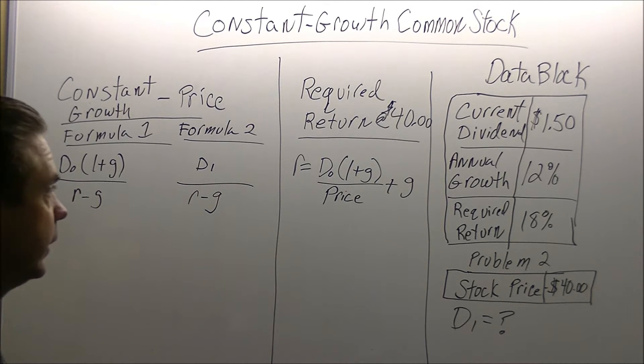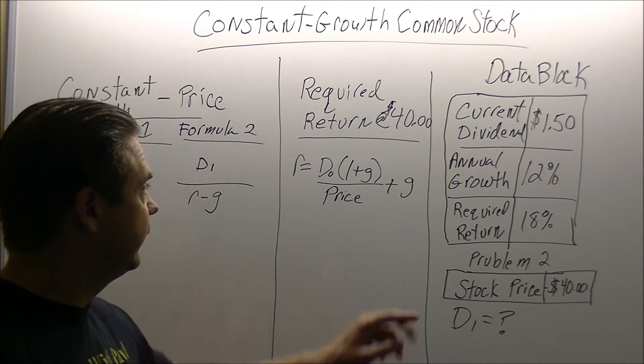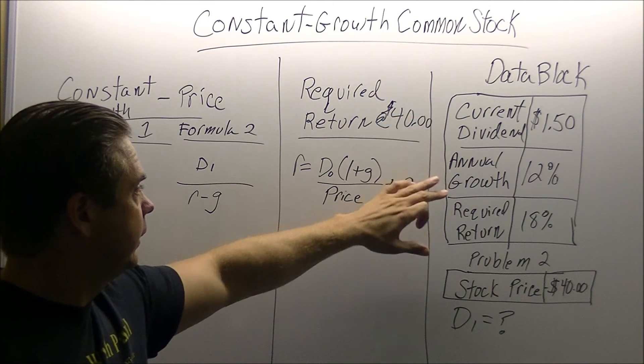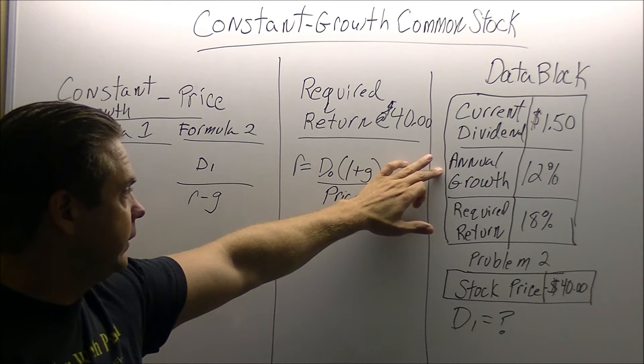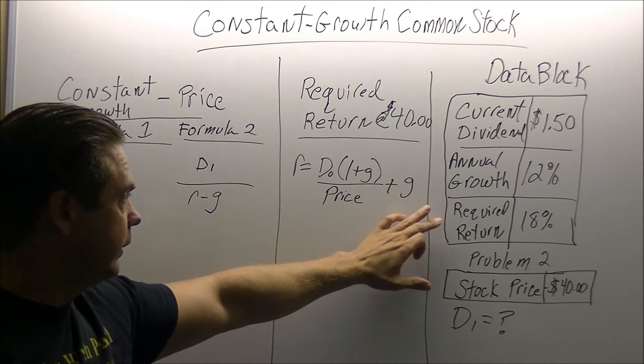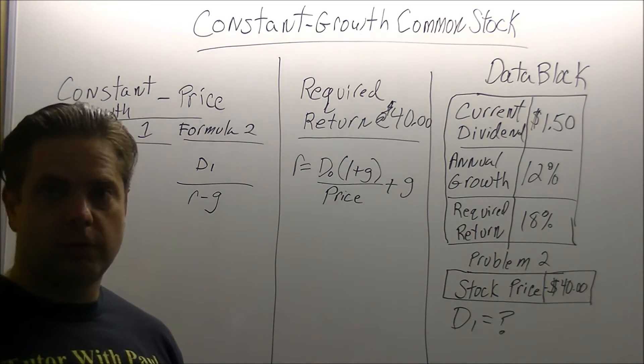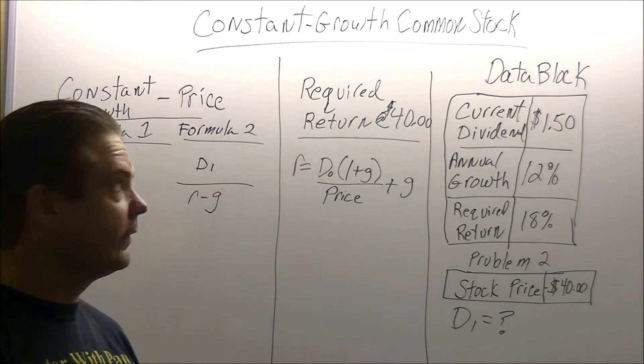For the constant growth formula, there are four different variables. You are going to have your current dividends D0, your annual dividends, your required return, and your stock price. Those are the only four variables that we are going to be working with for this formula.